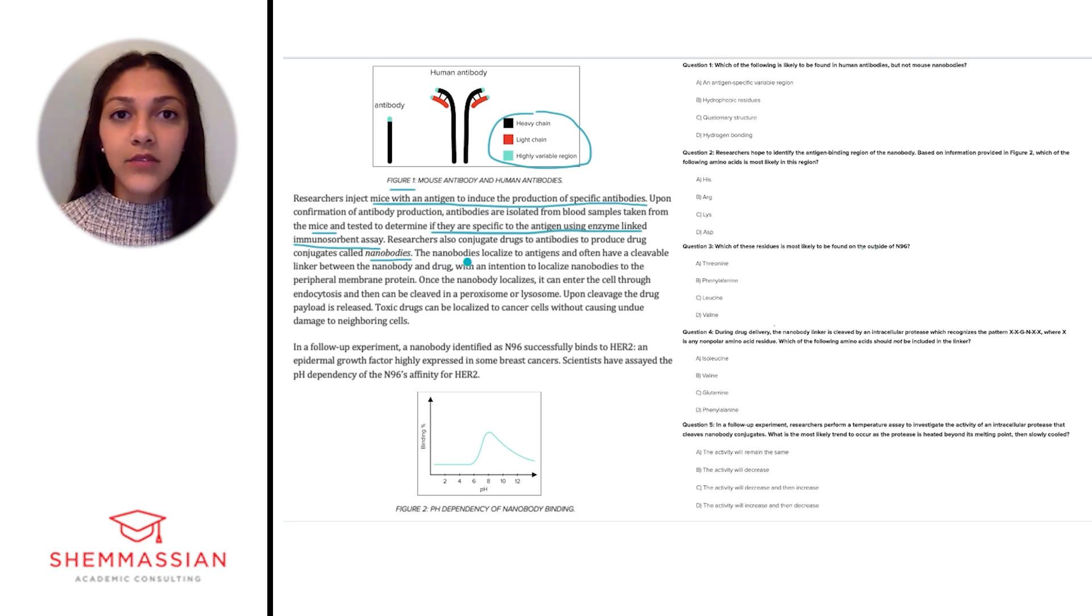Researchers also conjugate drugs to antibodies to produce drug conjugates called nanobodies. The nanobodies localize to antigens and often have a cleavable linker between the nanobody and the drug with an intention to localize nanobodies to the peripheral membrane protein. Once the nanobody localizes, it can enter the cell through endocytosis and then can be cleaved in a peroxisome or lysosome. Upon cleavage, the drug payload is released.